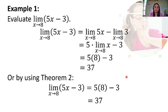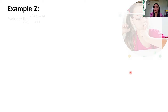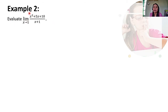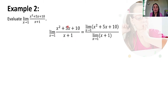Example number 2: evaluate the limit of X squared plus 5X plus 10 all over X plus 1 as X approaches 1. First, we check whether the constant makes the denominator equal to 0: 1 plus 1 is 2, so no. We can proceed. Using the quotient theorem, we separate this into the limit of X squared plus 5X plus 10 as X approaches 1 all over the limit of X plus 1 as X approaches 1.